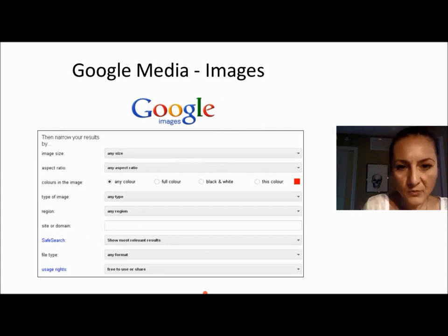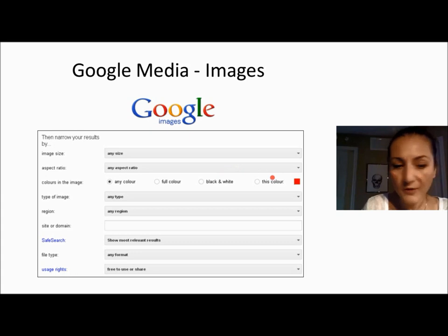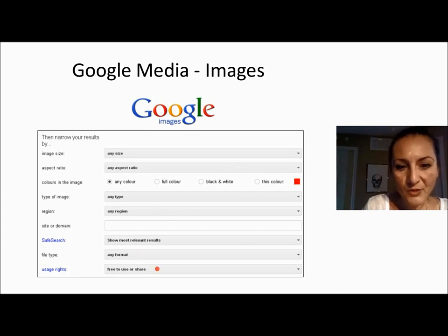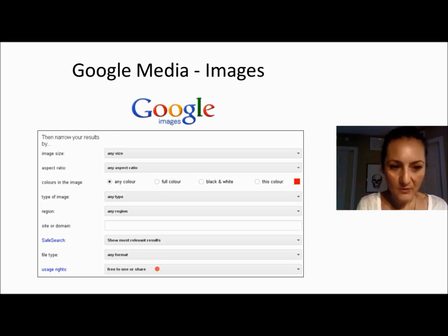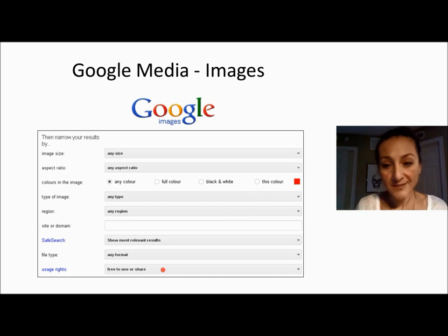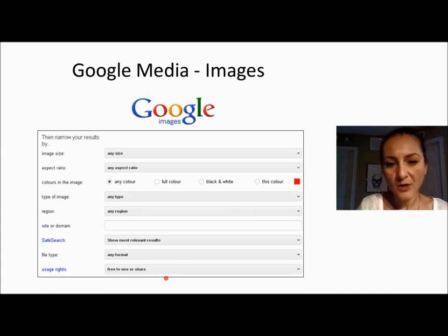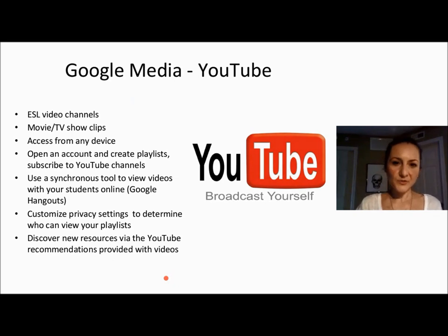In advanced search you can search by size, aspect ratio, pixelation, color — full color, black and white, or even all-yellow images — by region, by format such as JPEG or GIF, and crucially by usage rights. You can search for Creative Commons or copyright-free images so you won't infringe copyright. As teachers, this is a useful filter when finding images you're confident you're allowed to include in your teaching.